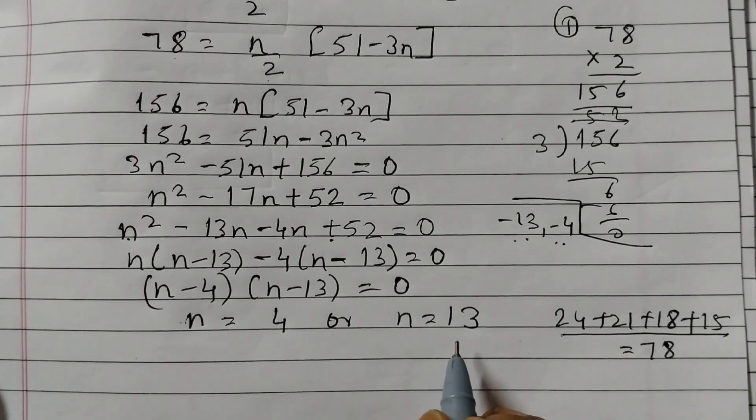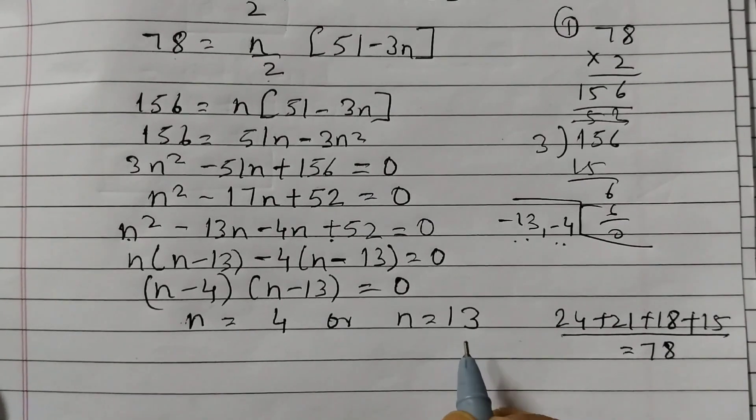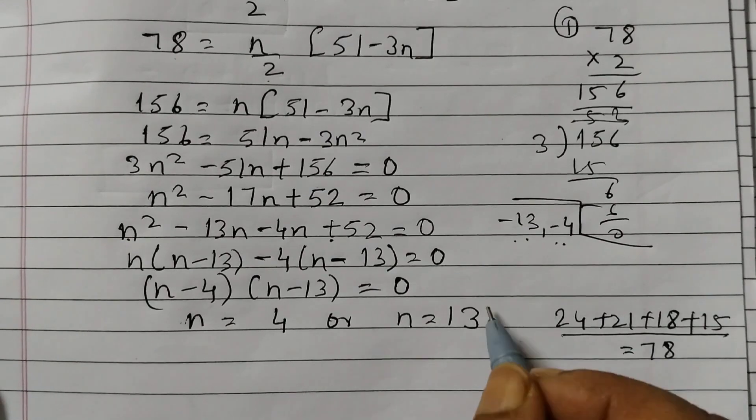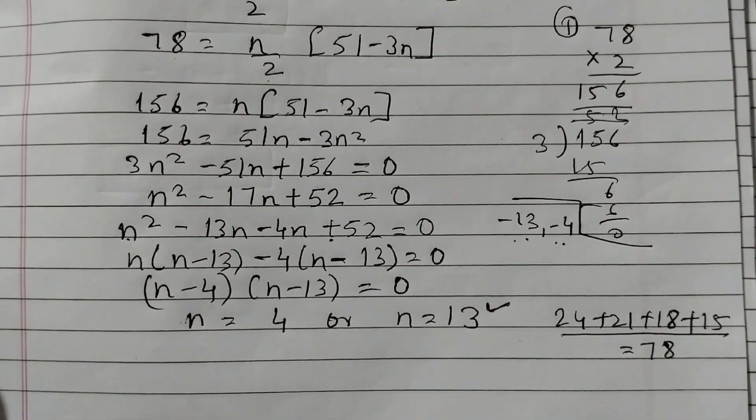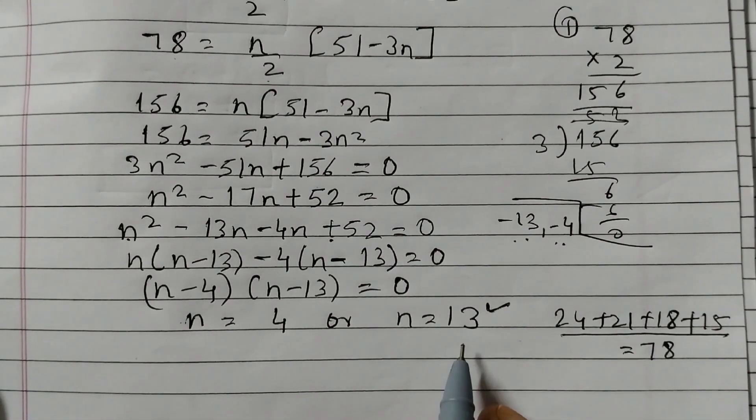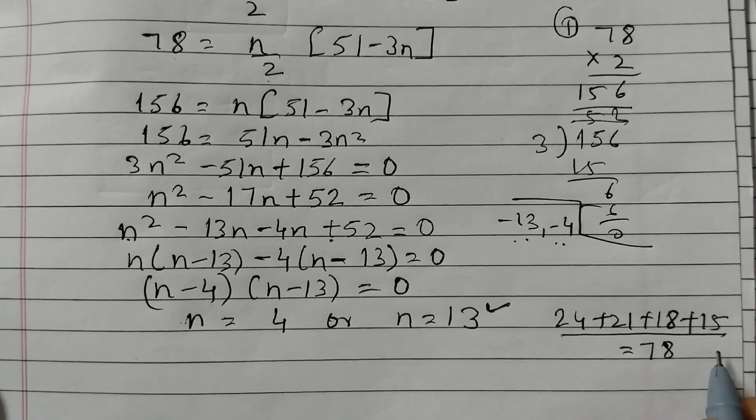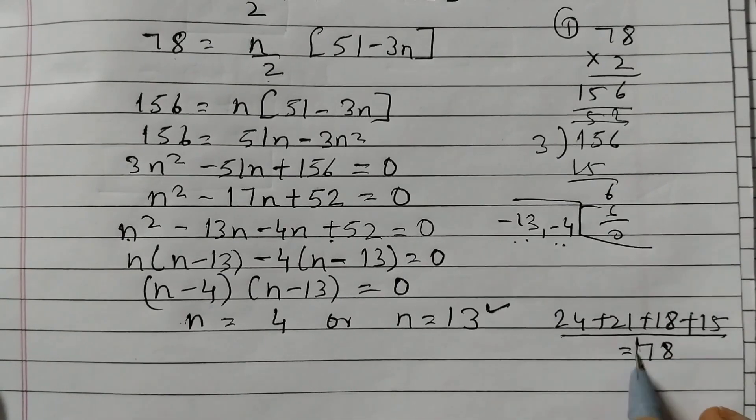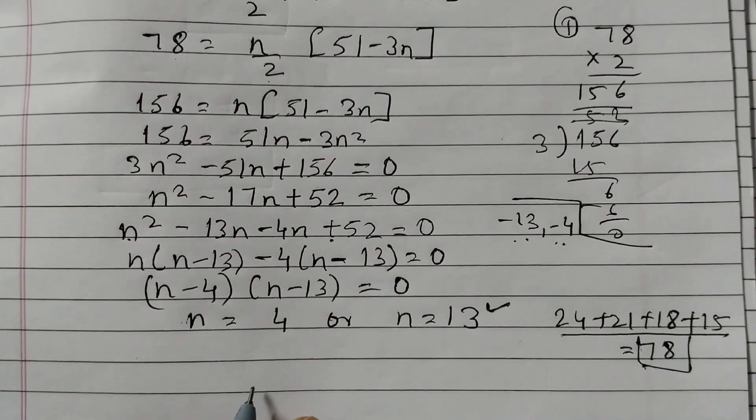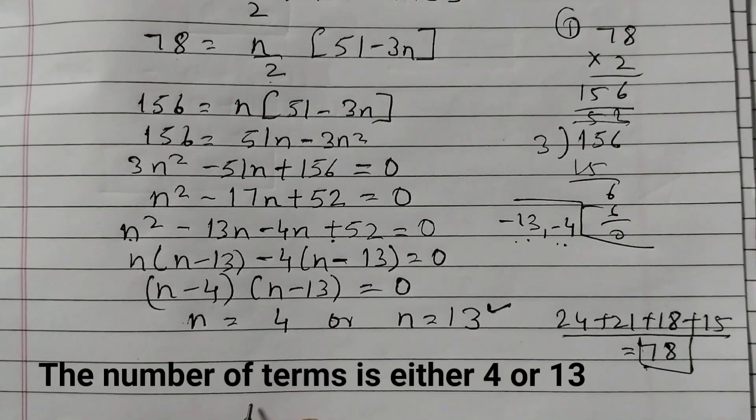Similarly, when you take 13 terms and add the terms, still you would get 78. You can try this one. It is not required for this question. But then if you want, you can just try the next terms. Like in total, there should be 13 terms. Add it up and see you will get 78. So your answer should be the number of terms is 4 or 13.